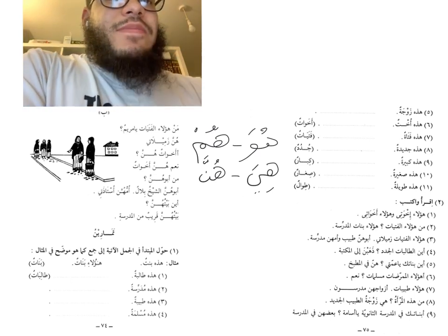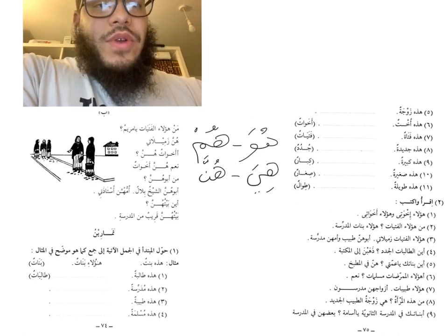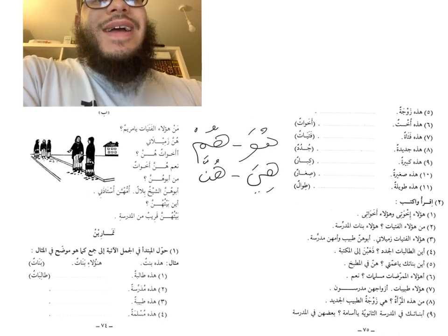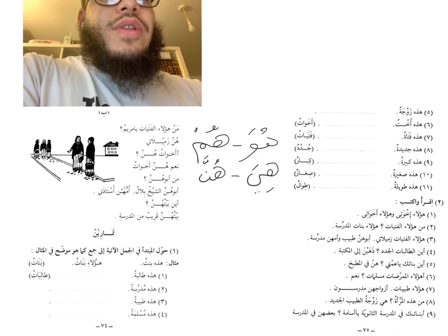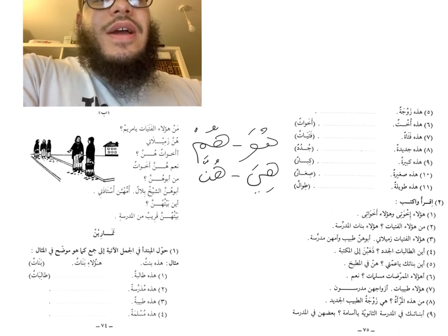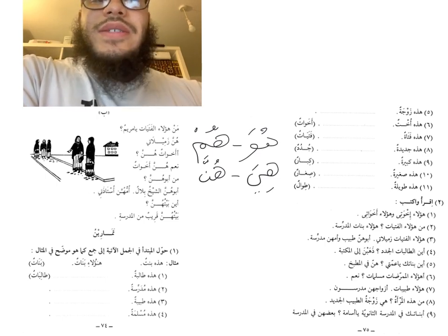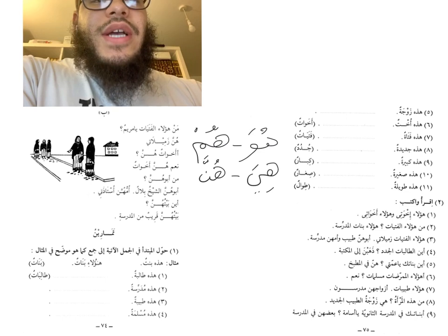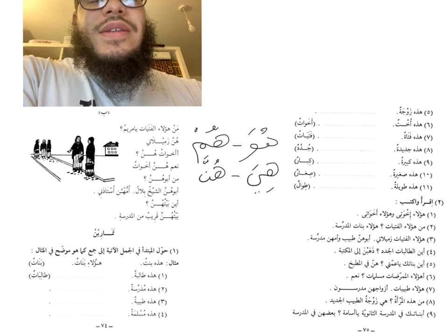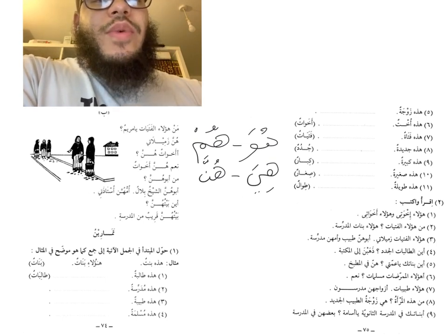The dialogue says: من هؤلاء الفتيات يا مريم — 'Who are these young women, oh Maryam?' Hunna zameelaati — 'They are my classmates.' أأخوات hunna — 'Are they sisters?' Naam, hunna أخوات — 'Yes, they are sisters.' من أبوهن — 'Who is their father?'